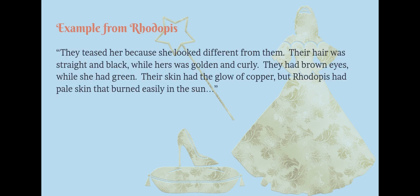I would paraphrase the passage like this: Rhoda P's was teased because she wasn't like them. She was blonde, they were black-haired. She had green eyes, they had brown eyes. She was pale, they were dark.